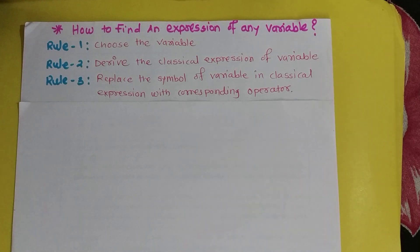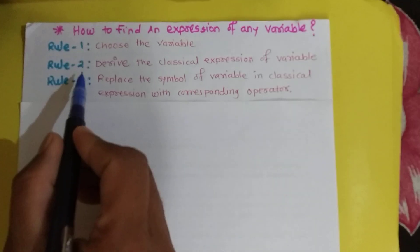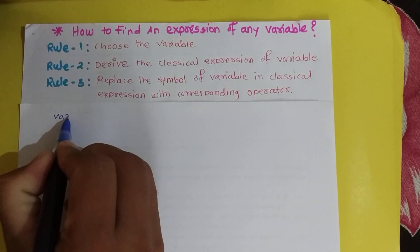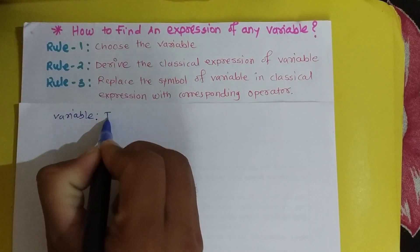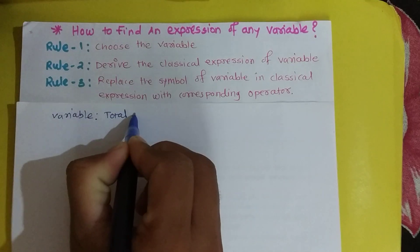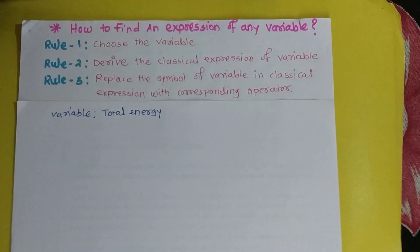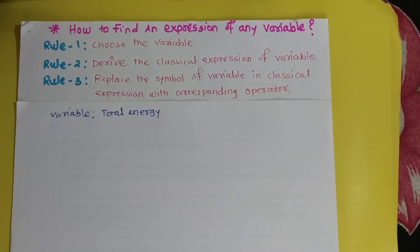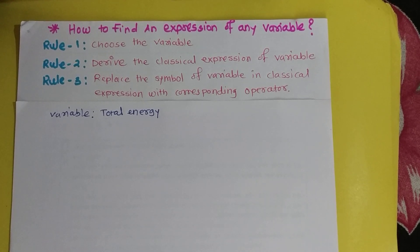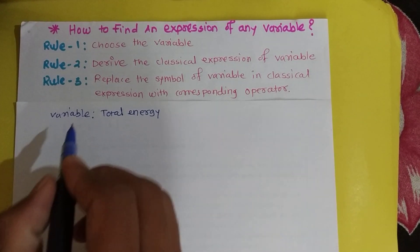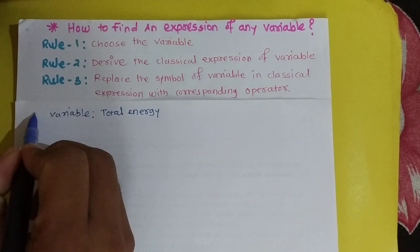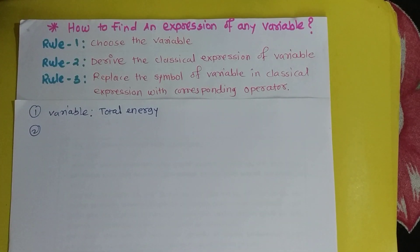To do this, you follow rule one, rule two, and rule three. According to rule one, we have to choose the variable. Here, the variable is total energy. We choose total energy because we want to calculate the total energy of a microscopic particle in quantum mechanics.